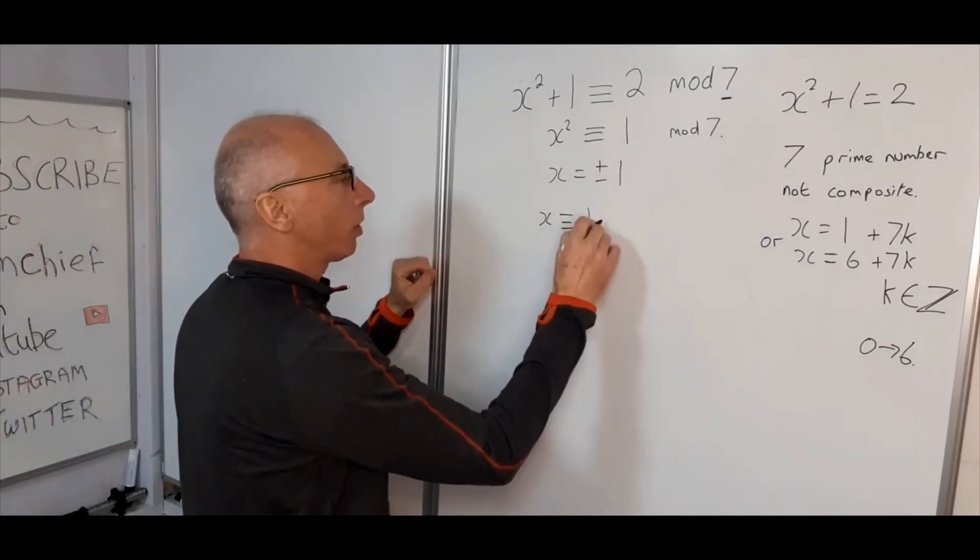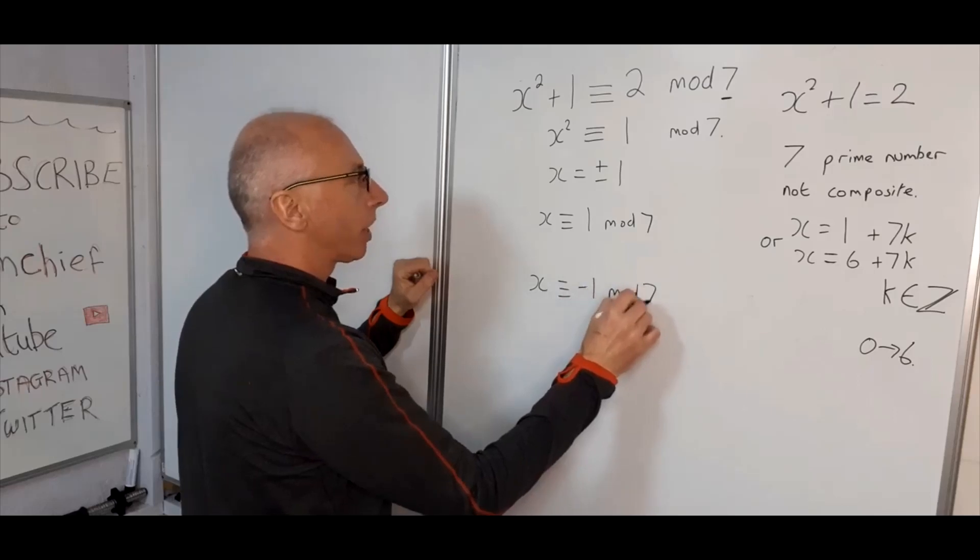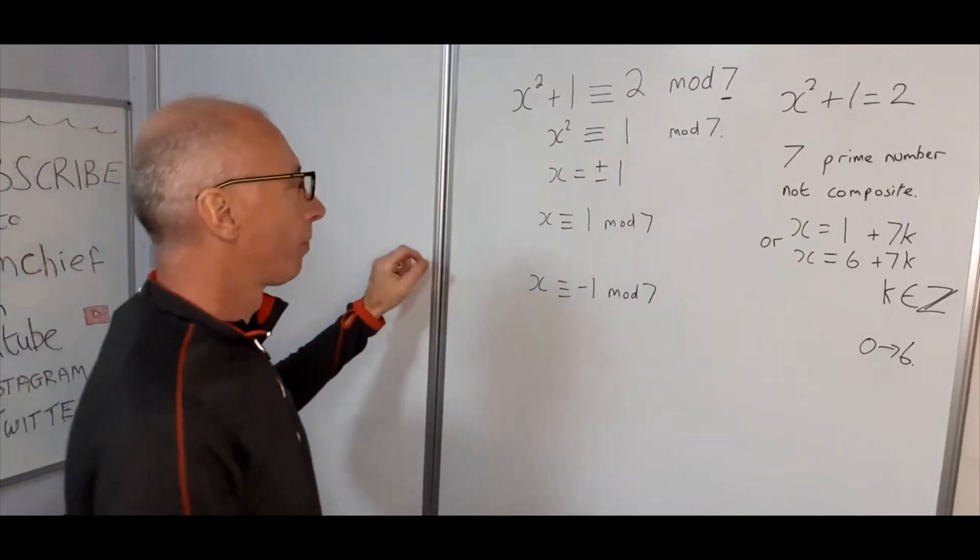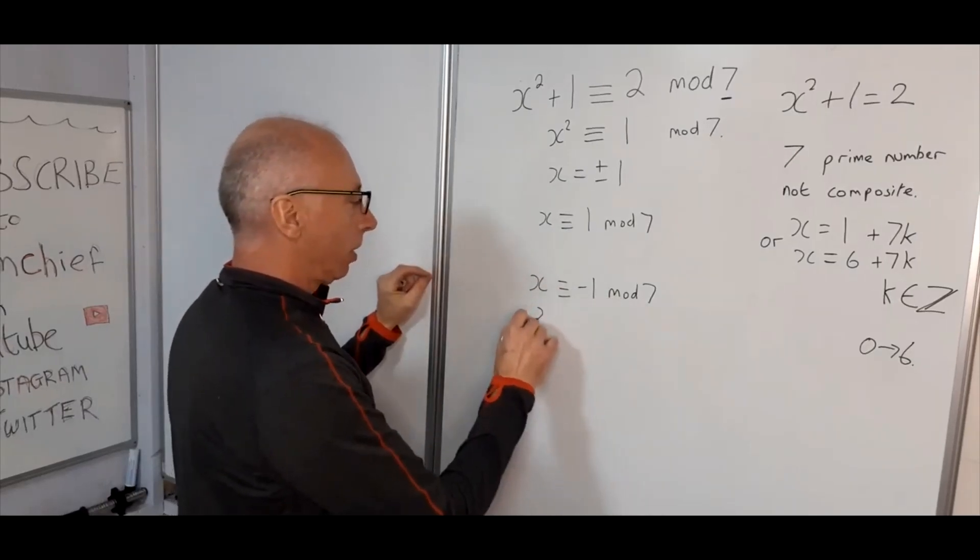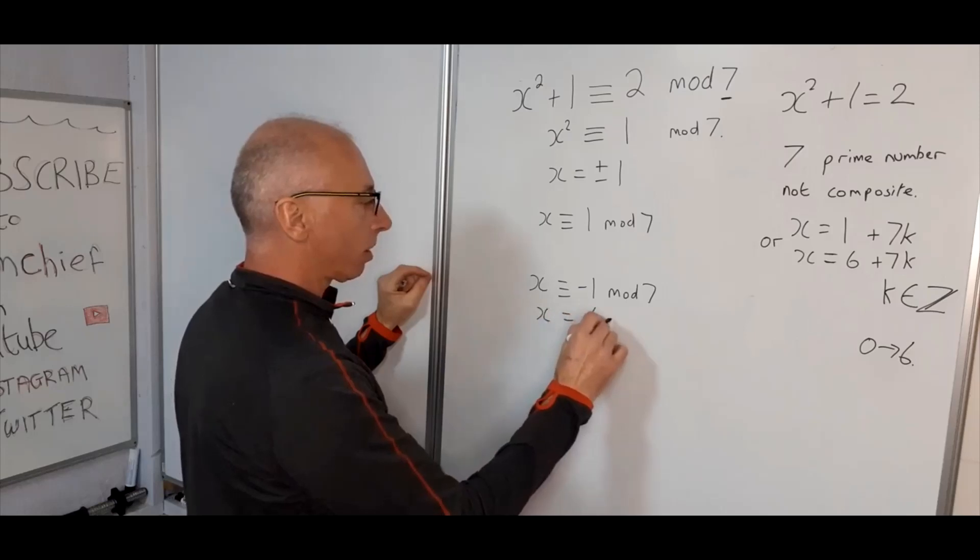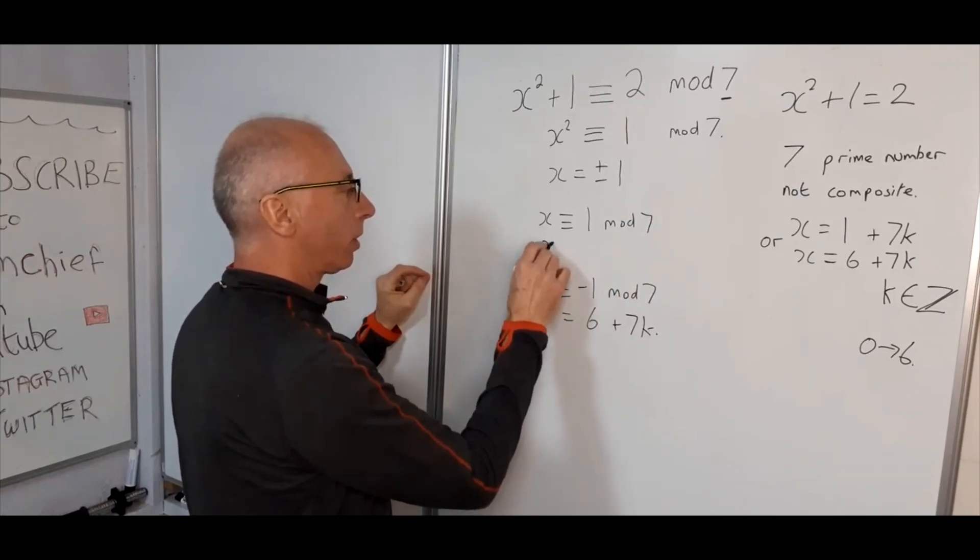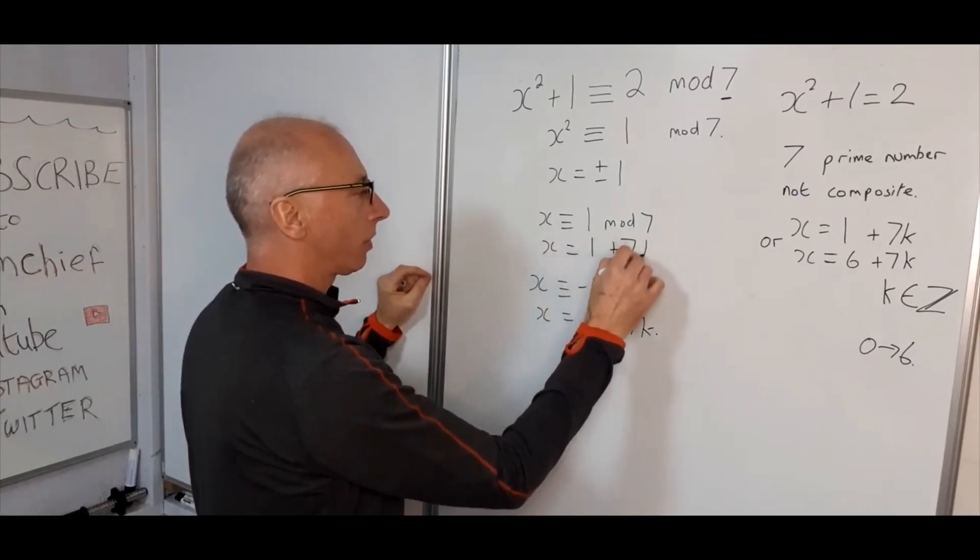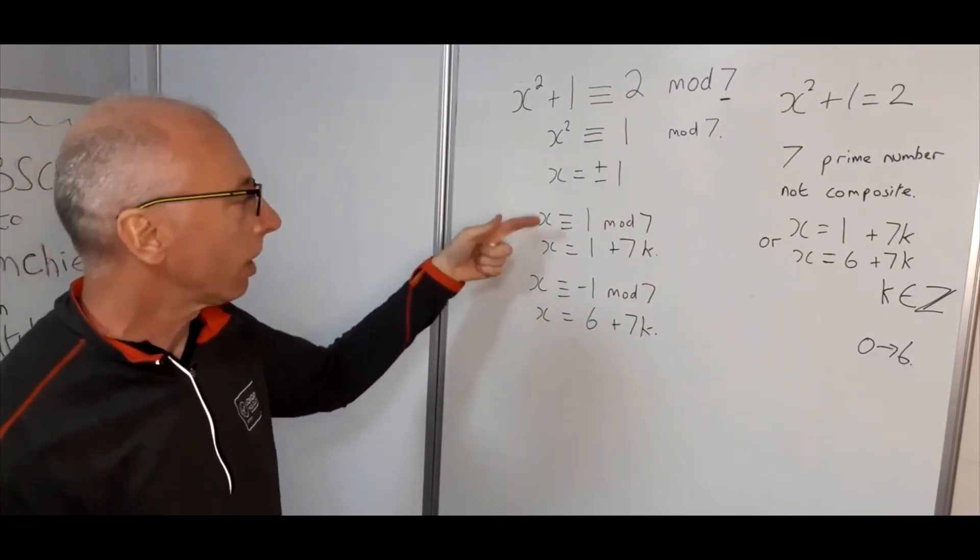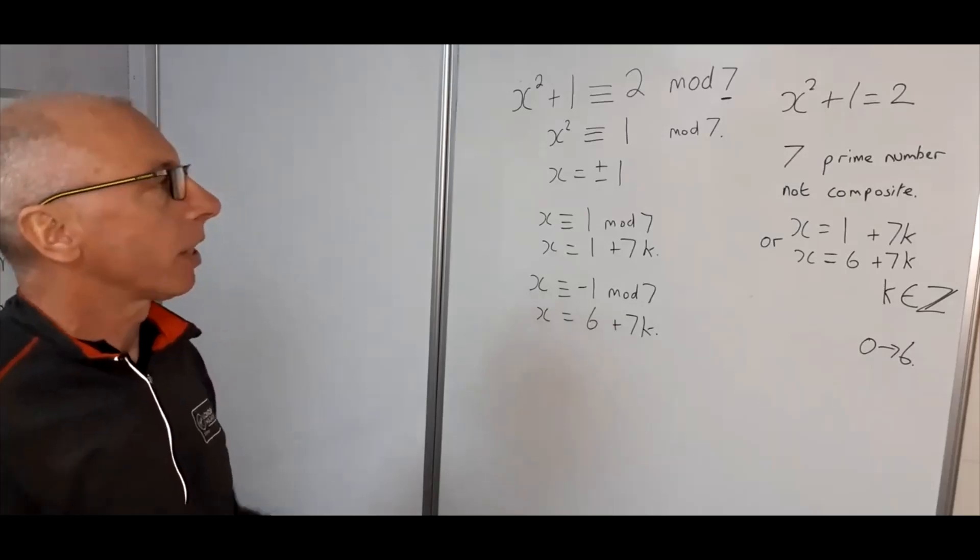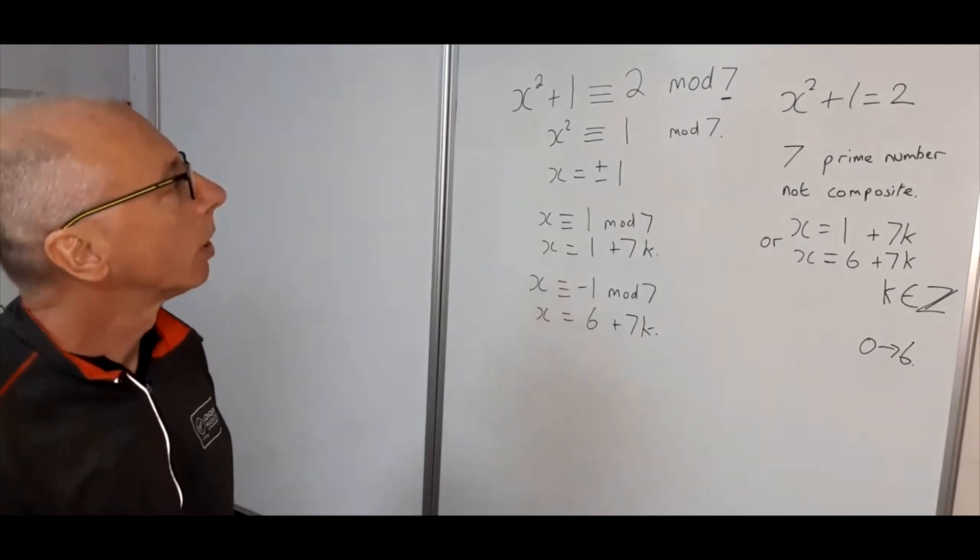So x is either congruent with 1 mod 7, or x is congruent with minus 1 mod 7. So as we did before, x is congruent with minus 1 mod 7, we can now say that x equals 6 plus 7k. And here we say x equals 1 plus 7k. So both methods will give the same solution as you would expect. So that's up to you which way you want to go. But both of those methods that we've shown here will both work. Okay.